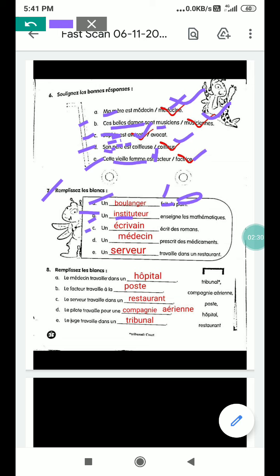Part C, écrivain écrit des romans. Writer. Écrivain is writer, écrit to write. Des romans, roman is a novel. Part D, médecin prescrit des médicaments. Prescrit is to advise. Des médicaments is medicines. Médecin is a doctor, advise medicines. Part E, serveur, a servant or waiter, work in a restaurant. Travaille is to work. Restaurant is a restaurant.